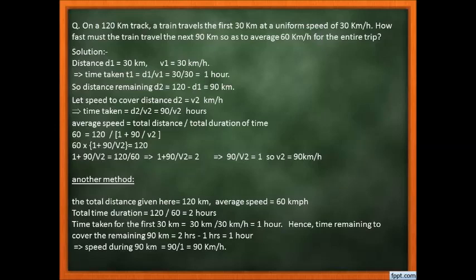The remaining distance D2 = 120 − 30 = 90 km. Let the speed to cover D2 be V2 km/h. Then T2 = D2/V2 = 90/V2 hours. Total time T = T1 + T2 = 1 + 90/V2.